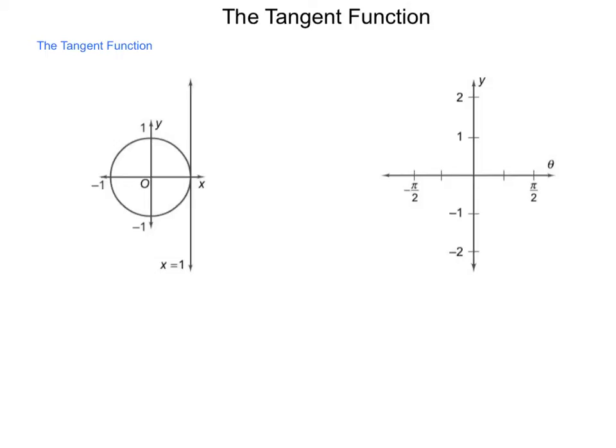So if we were to take our unit circle and draw a line at the equation x equals 1, we would end up with this vertical line that sits tangent to our function, or to our unit circle.